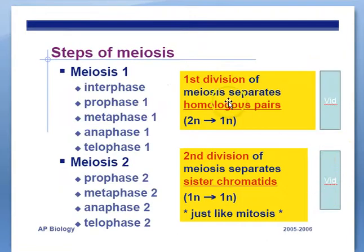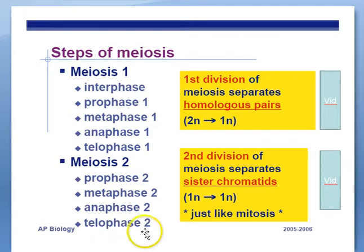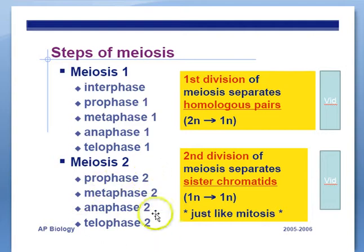Steps of meiosis: the first division separates homologous chromosomes, starting with interphase, then prophase I, metaphase I, anaphase I, telophase I. If you see a Roman numeral I after a phase, it's referring to meiosis — sex cell making — not mitosis. Meiosis II includes prophase II, metaphase II, anaphase II, and telophase II, referring to the second round of cell division in meiosis. The second division separates just the sister chromatids, going from haploid to haploid.